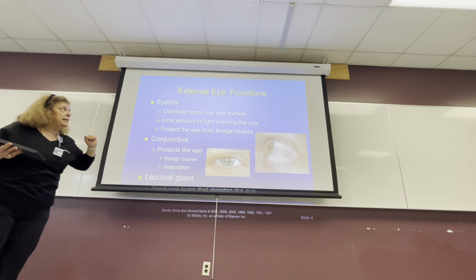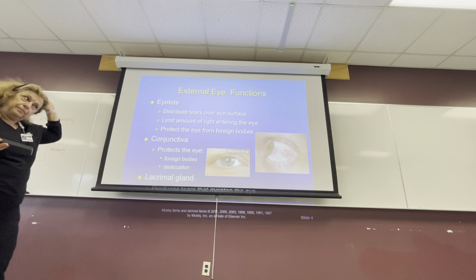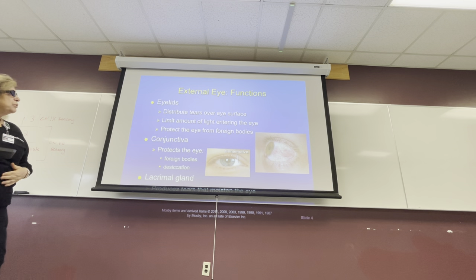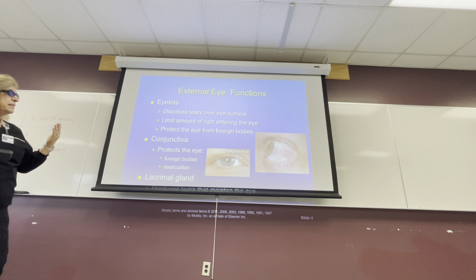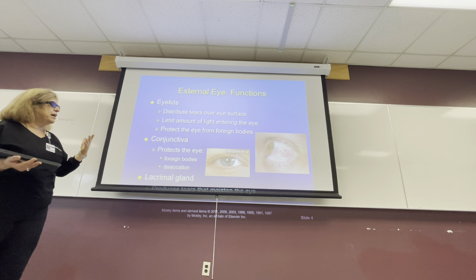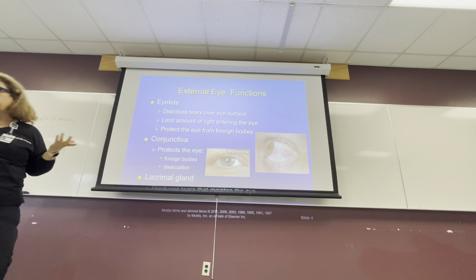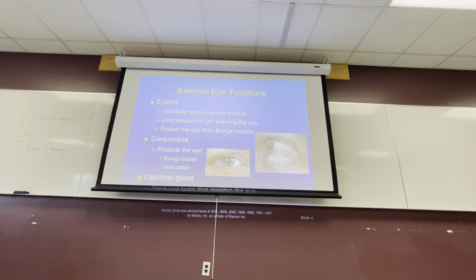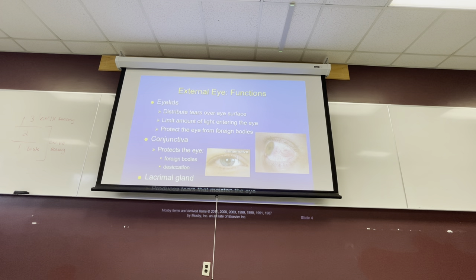The eyelids distribute tears over the eye surface, limit the amount of light, and protect the eye from foreign bodies. The conjunctiva protects the eye from foreign bodies and desiccation.